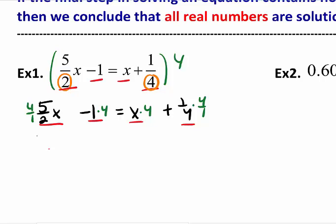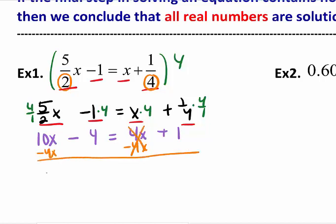I'm multiplying by 4 over 1 if it's a fraction and by 4 if it's not. I have to do every term. That is the key step. For my first term, I'm going to get 20 over 2, which is 10x minus 4 equals 4x. My last term, I'm going to get 4 over 4, which simplifies to 1. Much easier to solve this problem than the fraction problem. Now I'm going to collect like terms on the same side. I'm going to subtract 4x to move it to the other side.